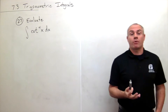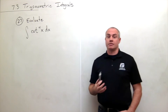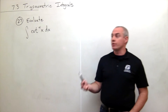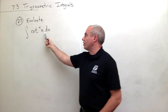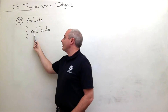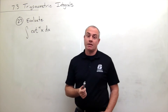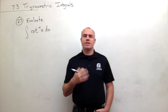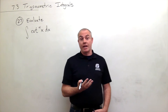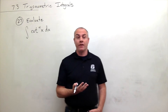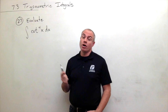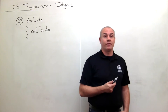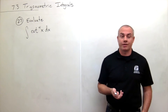As in most problems like this where we're dealing with tangents, cotangents, secants that are inside of an integral sign, the first thing we want to ask is: do I know the antiderivative? And quickly we see, no, I don't know the antiderivative for cotangent x to the fourth.